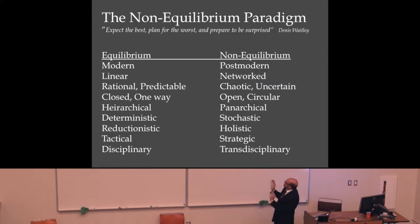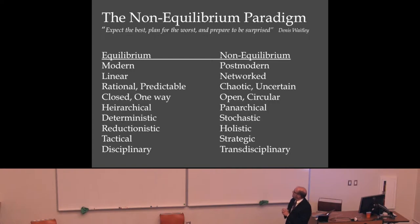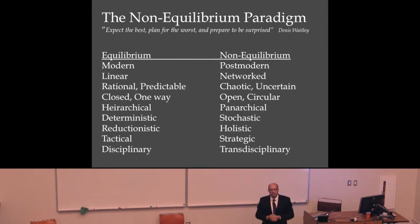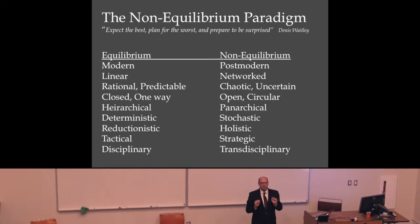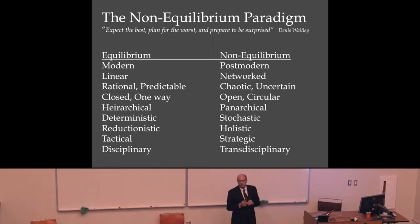Some who subscribe to chaos theory would say we're now in a non-equilibrium world or paradigm — post-modern, not rational and predictable, but chaotic and uncertain; not hierarchical but panarchical, named after the god Pan. Arguably we're in a whole new paradigm of human knowledge in this post-modern world where we accept that things are never going to be neat. As Dennis Waitley says: expect the best, plan for the worst, and prepare to be surprised.